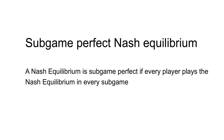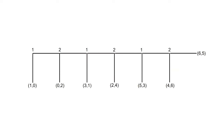A Nash equilibrium is sub-game perfect if every player plays the Nash equilibrium in every sub-game. We can solve for the sub-game perfect Nash equilibrium of sequential games by backward induction. To do that, we solve for the decision nodes at the end of the game first, and then work our way back to the beginning of the game. When marking choices in a sequential game, it is often useful to mark the option taken by the player, or that not taken, in addition to indicating the payoff they would receive.